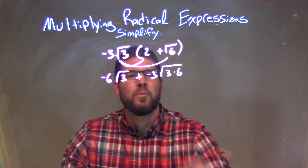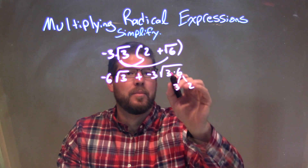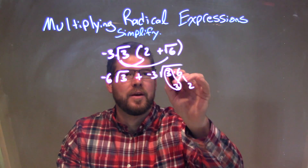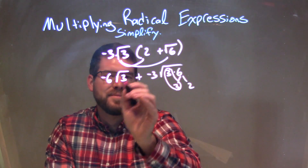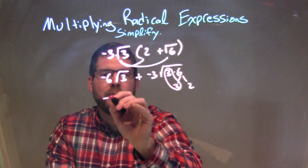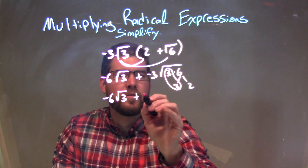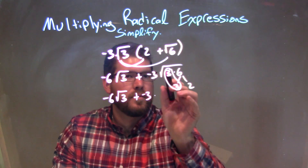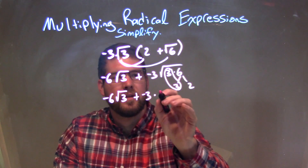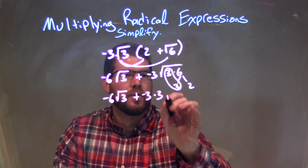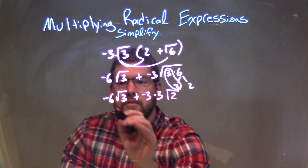Now let's see if we can break this down. Well, 6 can break down to be 3 times 2, and I see a pair of 3s right there. So once we simplify it, negative 6 times the square root of 3 — I can't break that down anymore. Plus negative 3 on the outside, the pair of 3s come together: a single 3 on the outside, and we're left with the square root of 2 on the inside, the only single left.